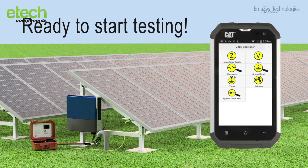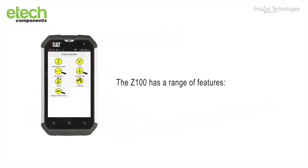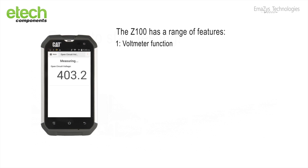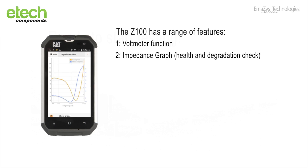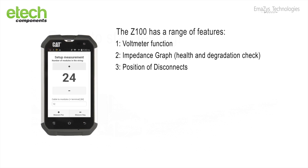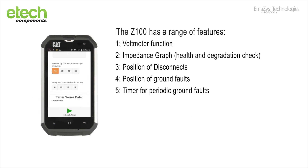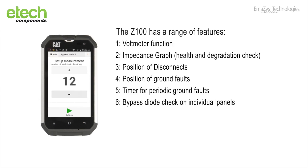Ready to start testing. The Z100 PV Analyzer has a range of features: voltmeter function, impedance graph, health and degradation check, position of disconnects, position of ground faults, timer for periodic ground faults, bypass diode check on individual panels, and report settings.